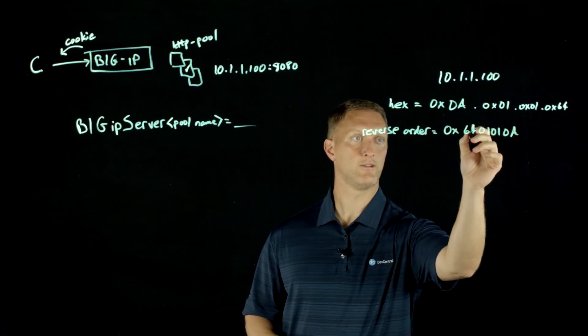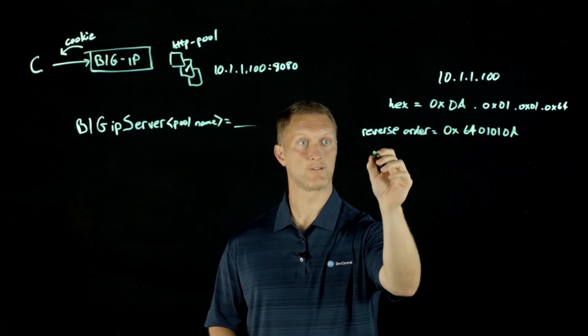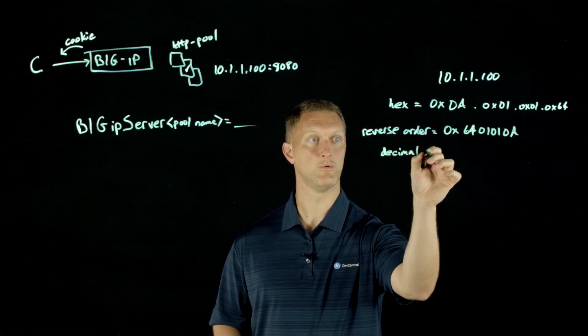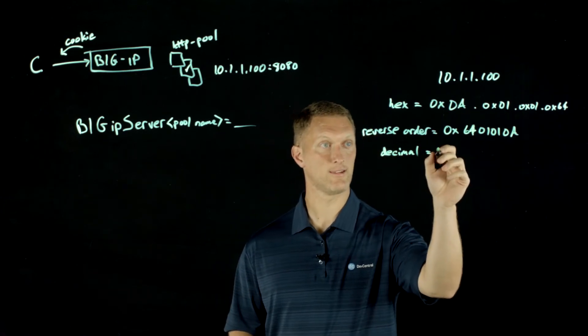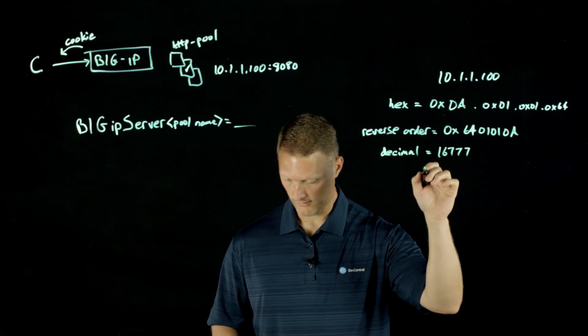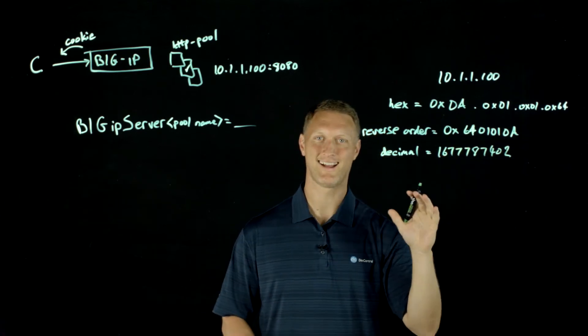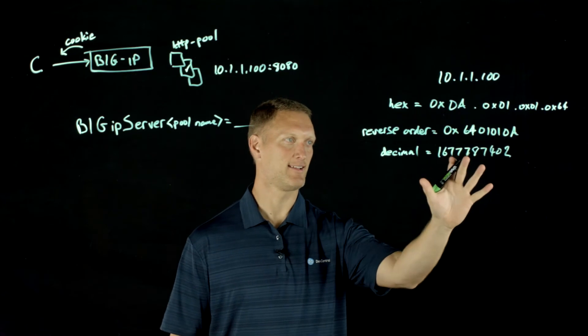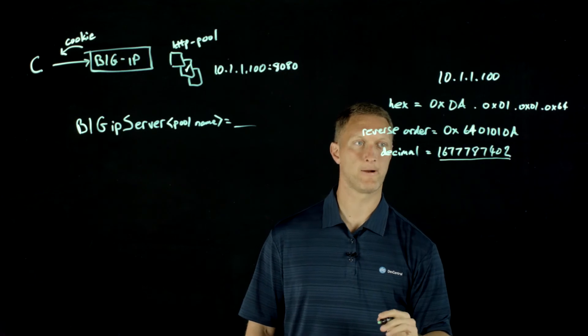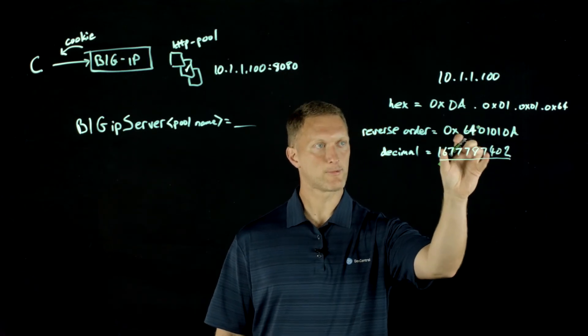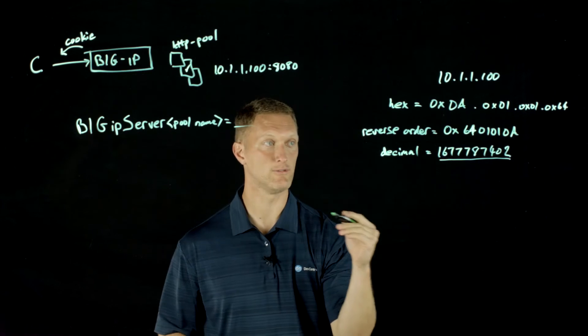Now we have this hexadecimal value 6401010A. Then we're going to take that and we're going to convert to decimal. What's the decimal value of that hexadecimal number right there? In this case, it's a big old number 1677778402. I did that beforehand, I did not just convert to hexadecimal in my brain, I'm not quite that good at hexadecimal conversion. So you're left with this big, crazy value. That is the decimal representation of this reverse order hexadecimal that's ultimately based on this IP address, which is the IP address of the server that you connected to.